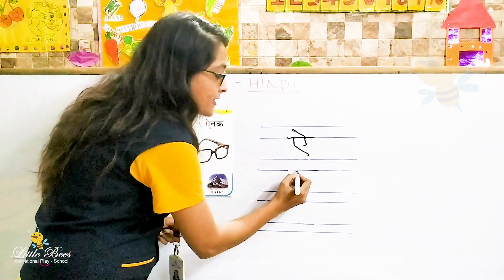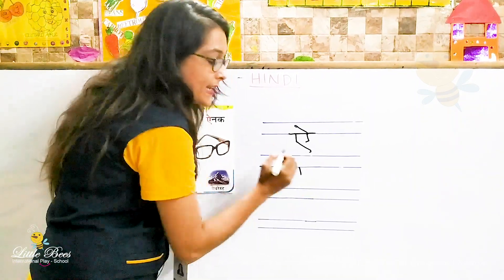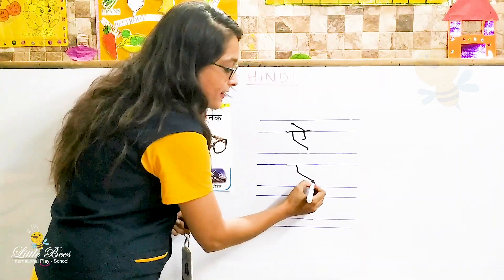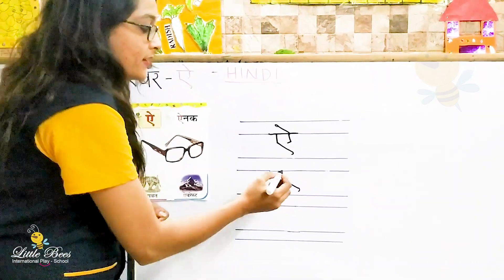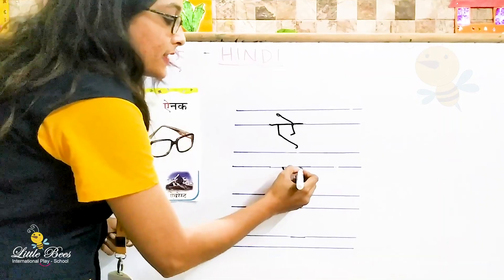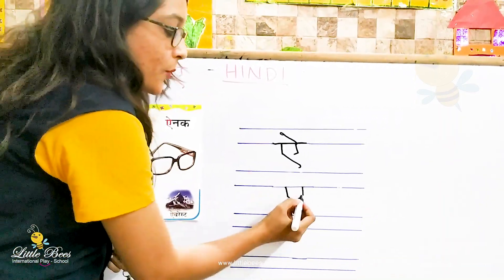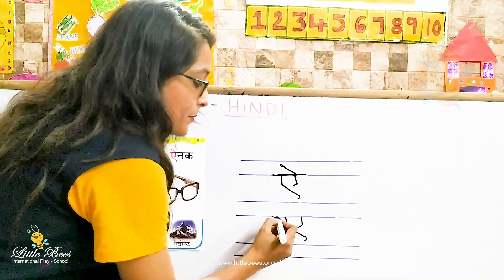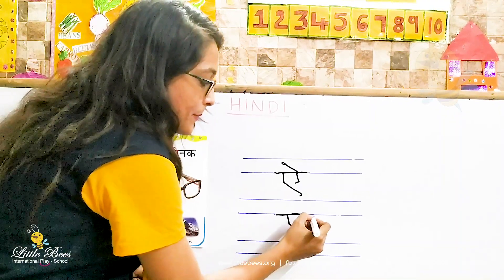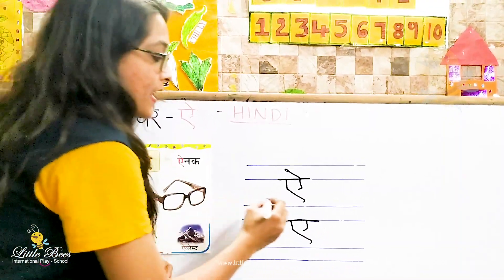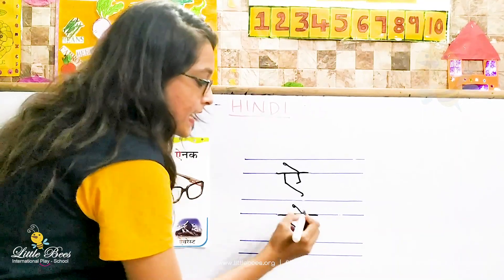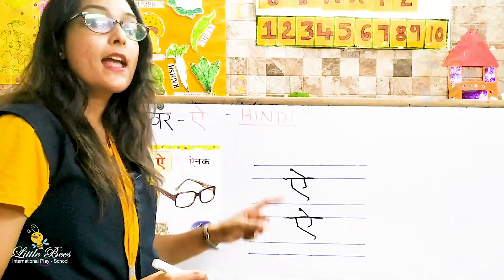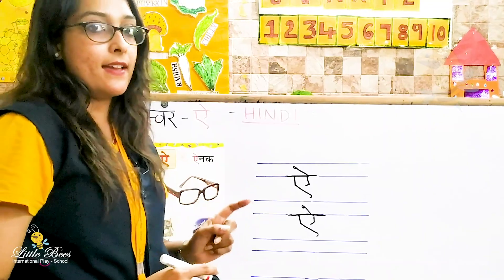So repeat it again: a standing line and a slanting line, a curve backward, another standing line with a small slanting line. We will put the sleeping line on top, and we will make a tail. Can you see? This is the swar ae.